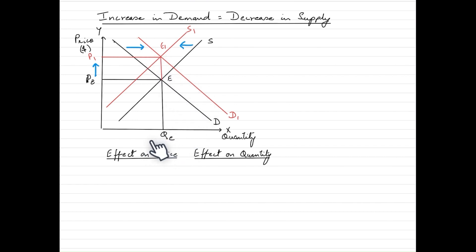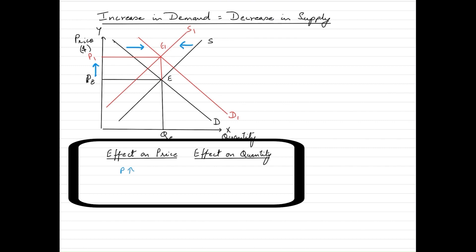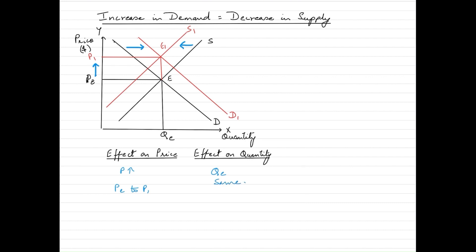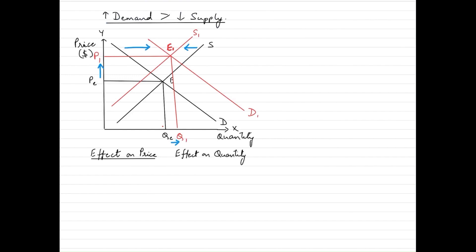In this scenario, the quantity is the same because the change in demand is equivalent to the change in supply. The overall impact on price is that the price has gone up from Pe to P1; however, quantity remains the same.